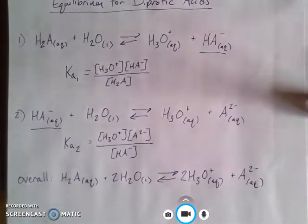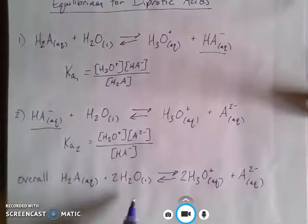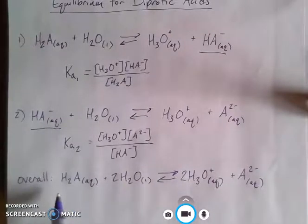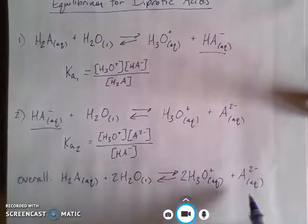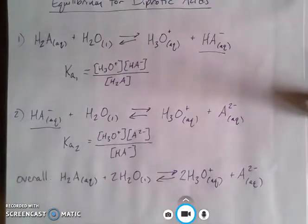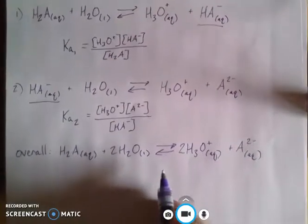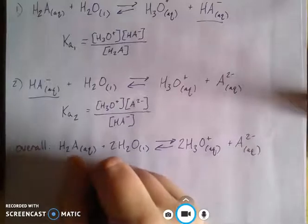When we first started talking about acids and bases, then this is the way that you would predict it would have happened, right? I react my acid with my water, I get as many hydroniums as I have hydrogens to give, and then I'll have whatever's left over when I use up all of those hydrogens. So that's my overall process. This overall process is an equilibrium and also has a Ka value associated with it.